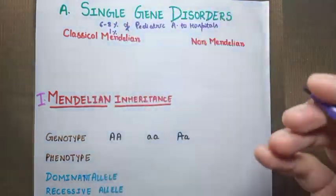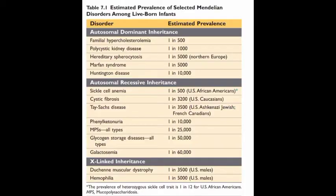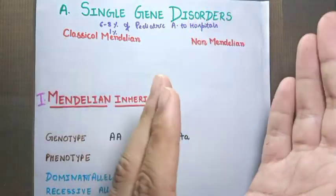Single gene disorders are very rare. Here is a chart which signifies the prevalence of diseases. Familial hypercholesterolemia occurs in 1 in 500, polycystic kidney disease 1 in 8,000, hereditary pyrocytosis 1 in 5,000, and in autosomal recessive inheritance, phenylketonuria 1 in 10,000. Sickle cell anemia prevalence is 1 in 500. You can look at this chart for the prevalence of different single gene disorders. Hemophilia occurs in 1 in 5,000 US males.